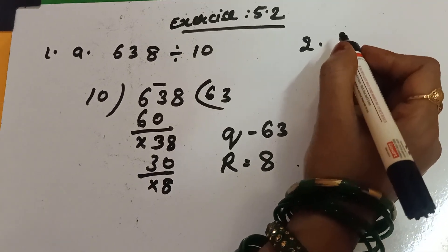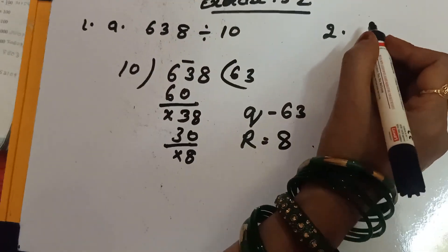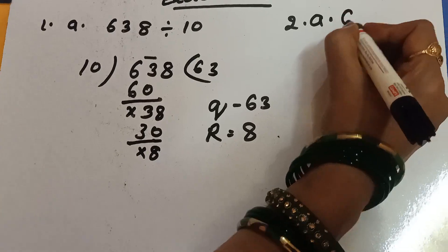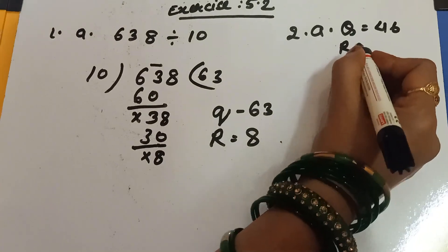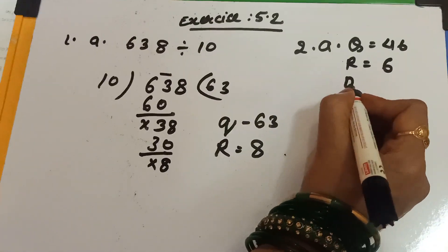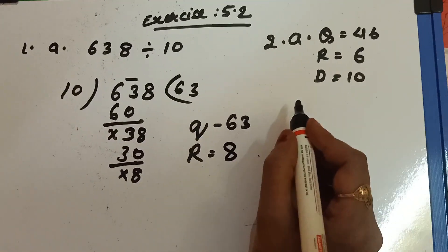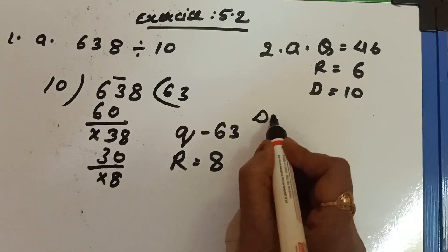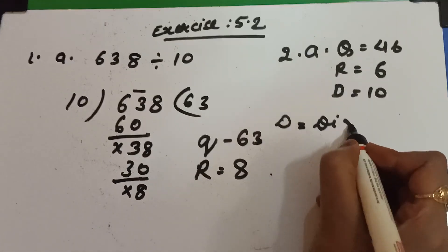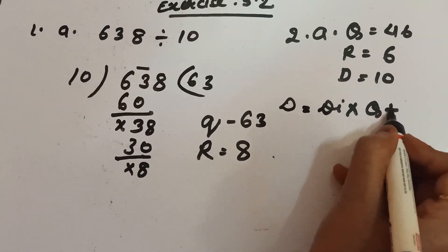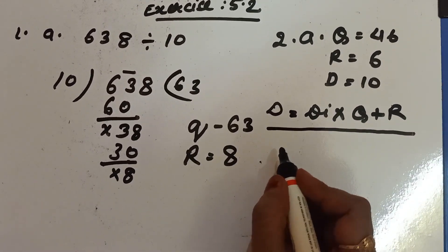The second question is: find the dividend. The quotient, remainder, and divisor are given, and you have to find the dividend. Children, recall the formula I taught you in the previous class: dividend equals divisor multiplied by quotient plus remainder. Always write this formula first.